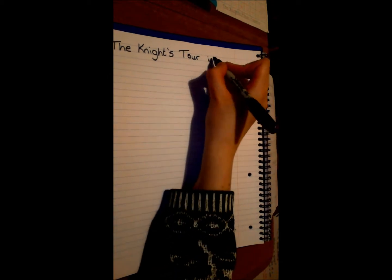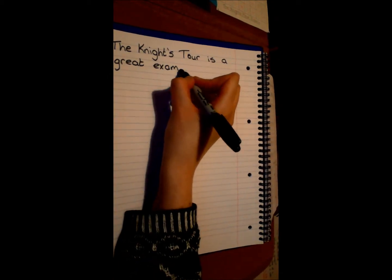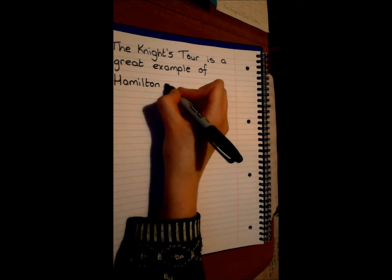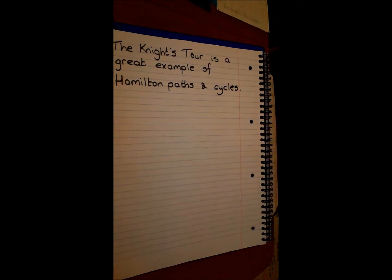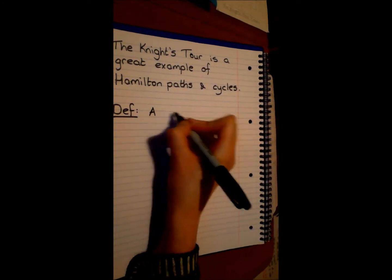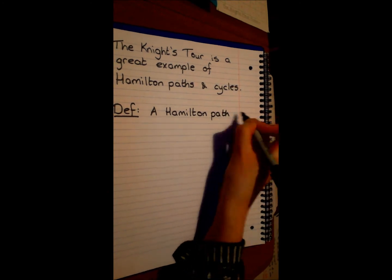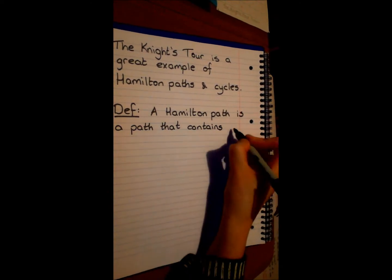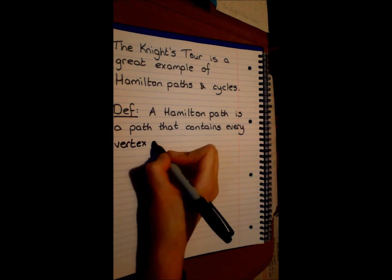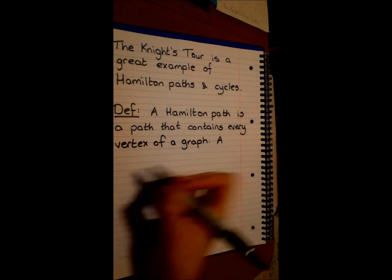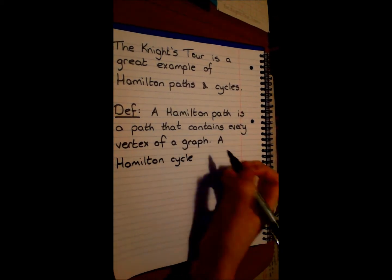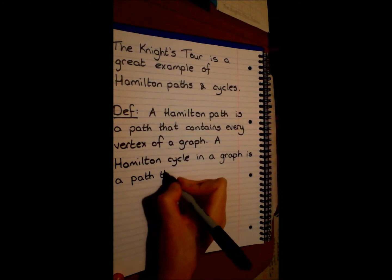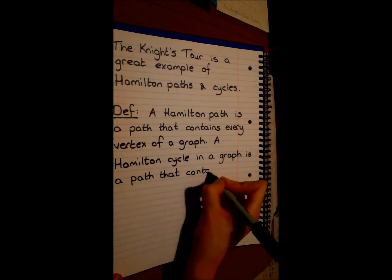The Knight's Tour gives a specific introduction to Hamilton paths and cycles. A path is a route around a graph that doesn't use any edge more than once. A Hamilton path is a path that contains every vertex. A Hamilton cycle is a path that contains every vertex that starts and ends at the same point.